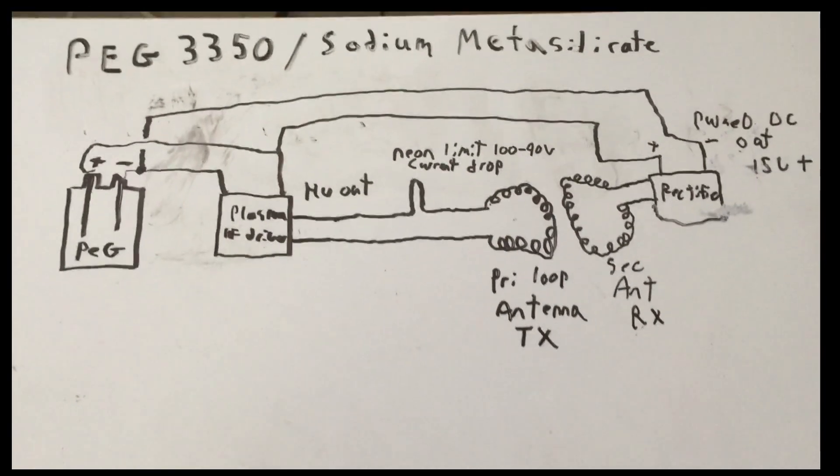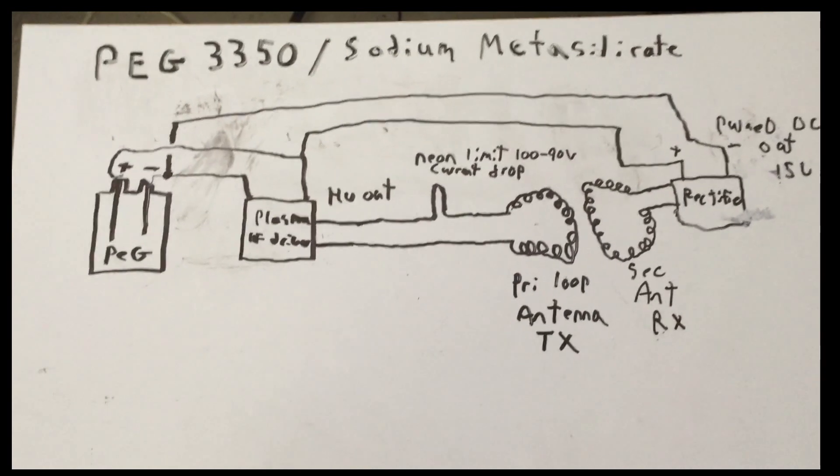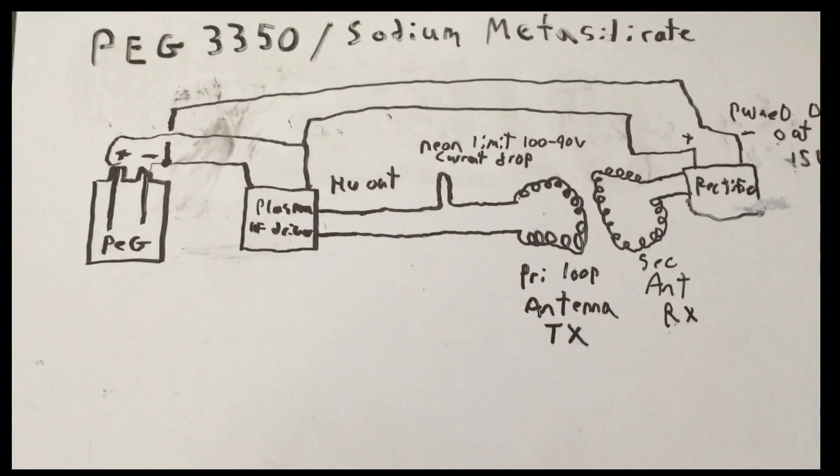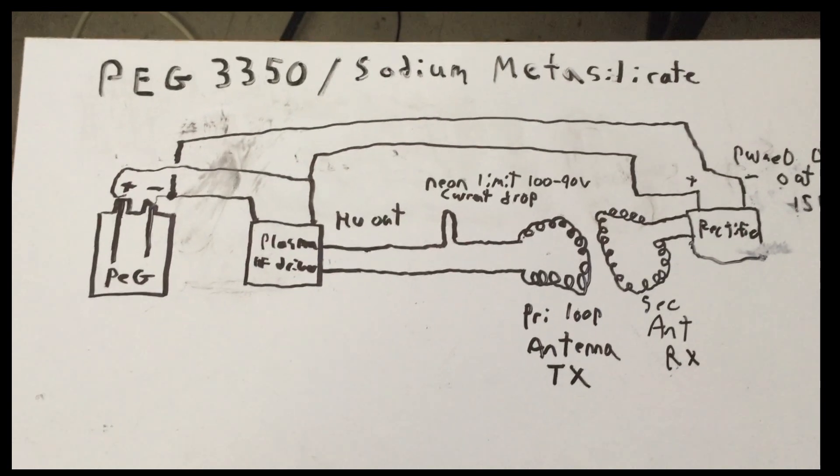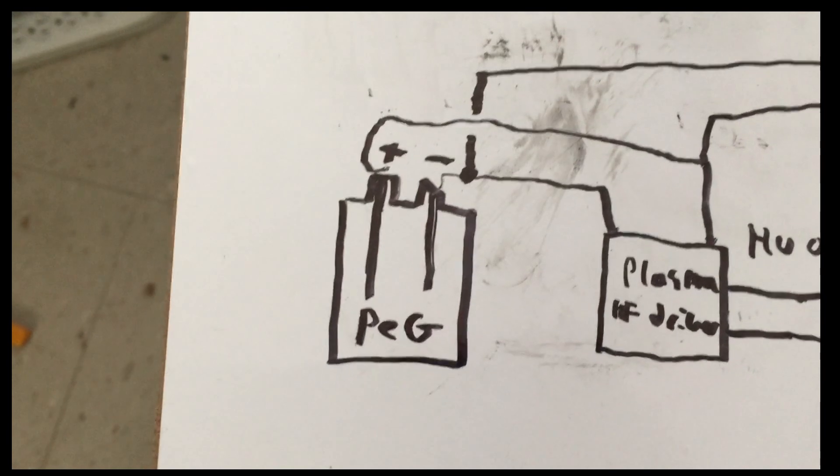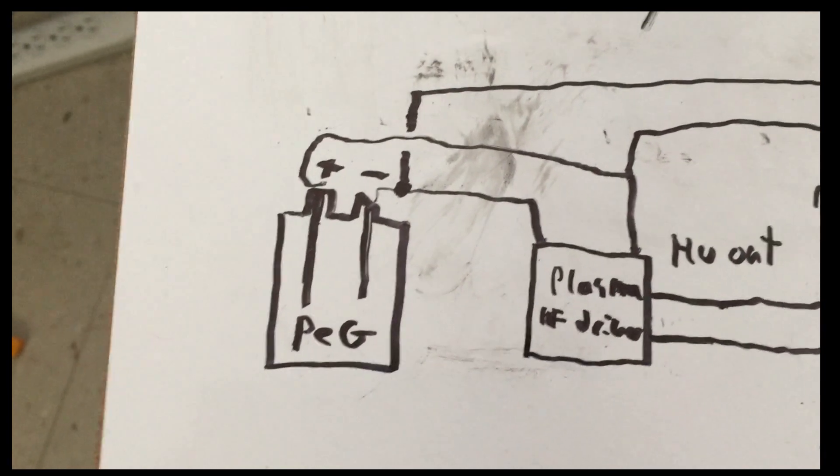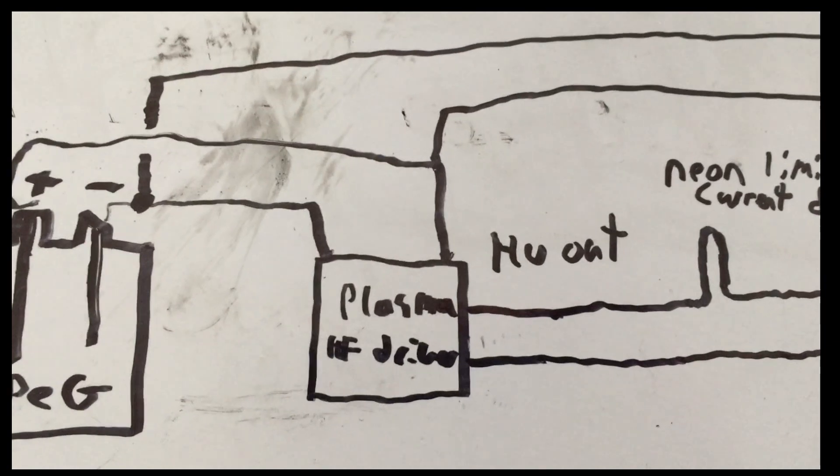Good day, folks. I figured out a self-looping setup that works well with no external power source, essentially in traditional senses here. I was able to enhance a PEG cell using sodium metasilicate, so it's multilayered. Here's the PEG cell. What's nice is it's only one cell needed. It basically drives a plasma high-frequency high-voltage driver.